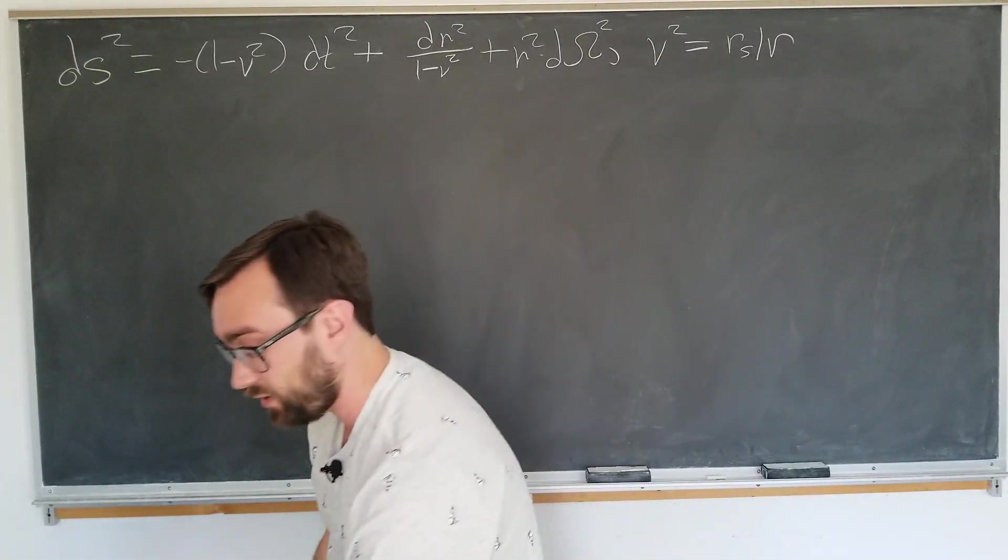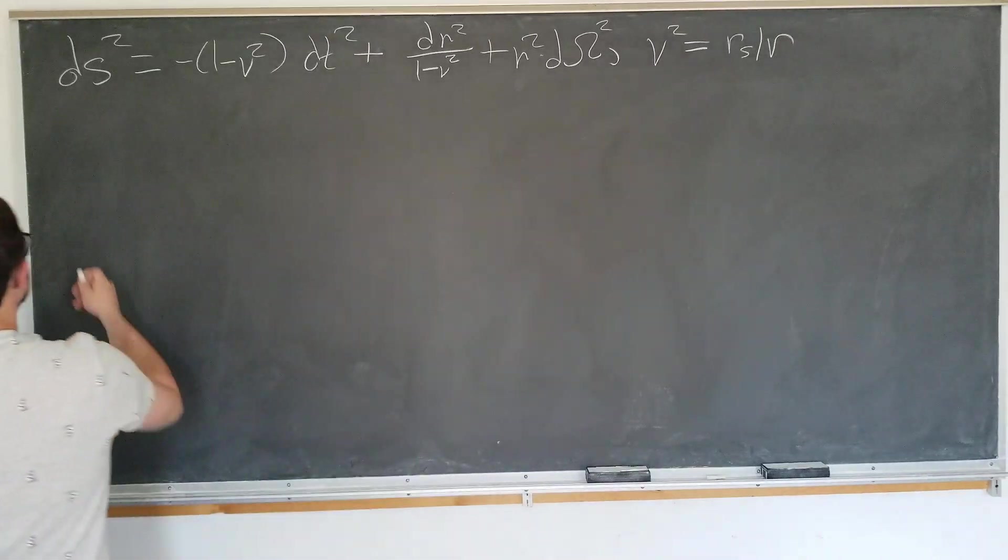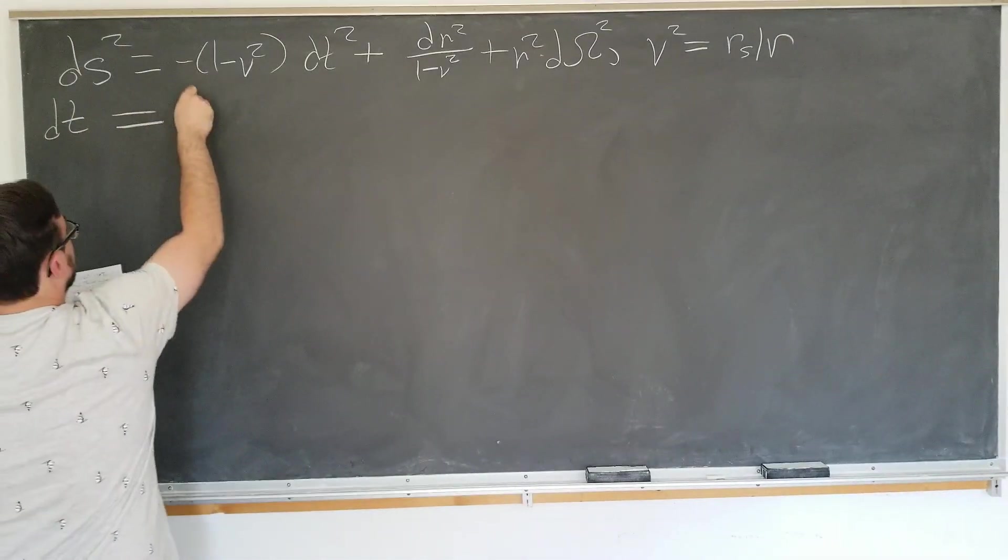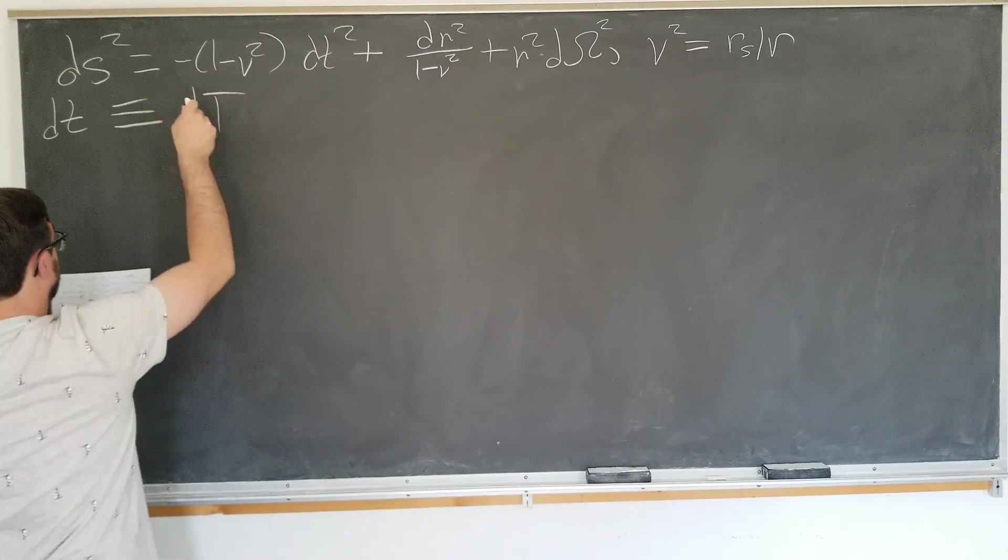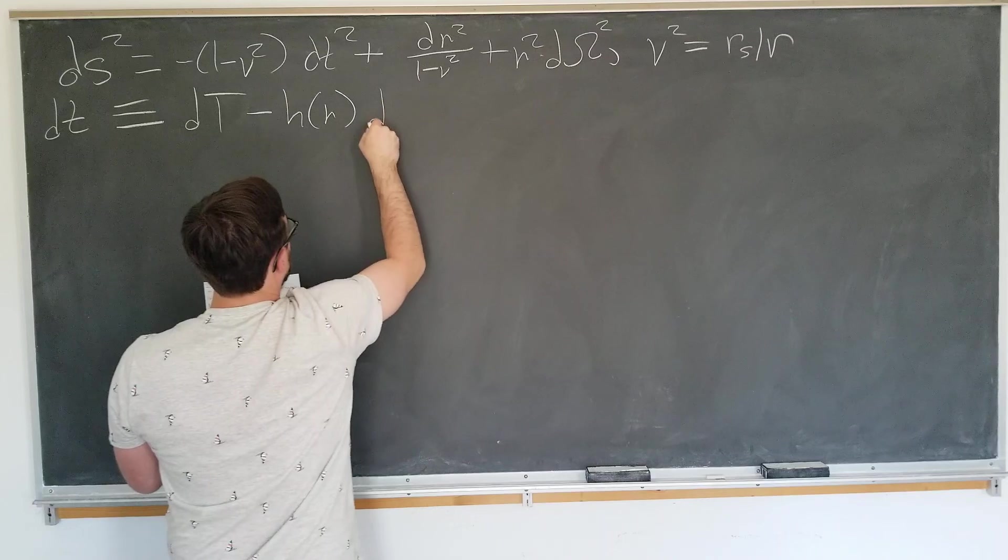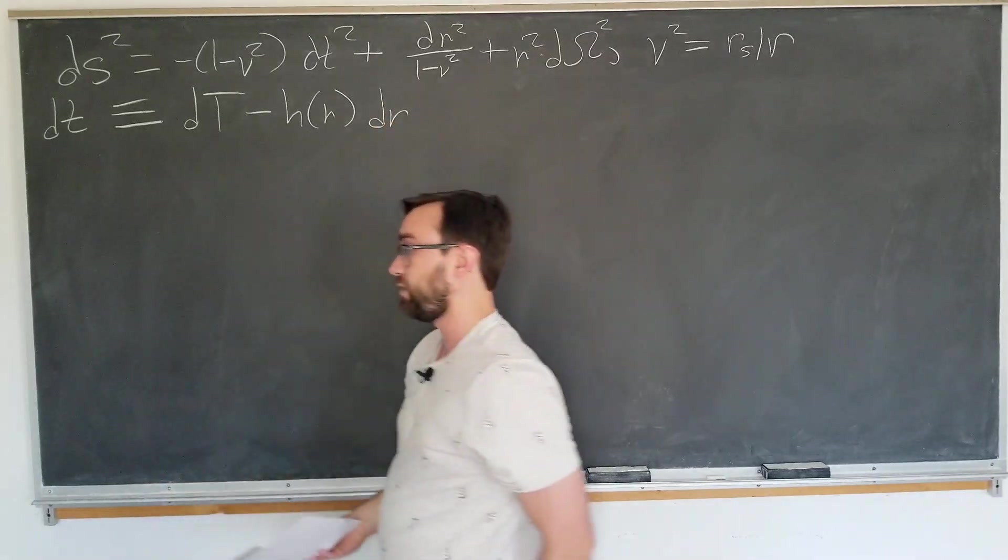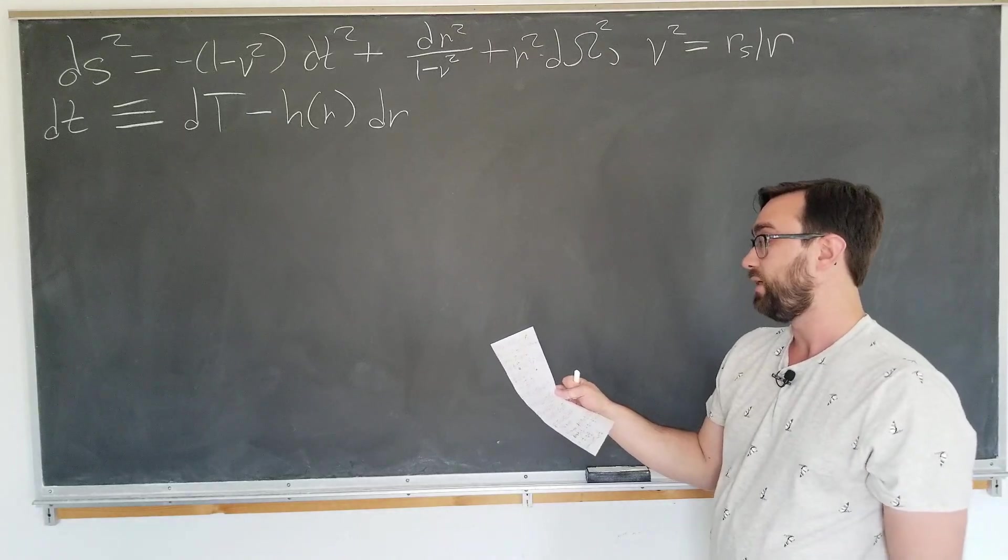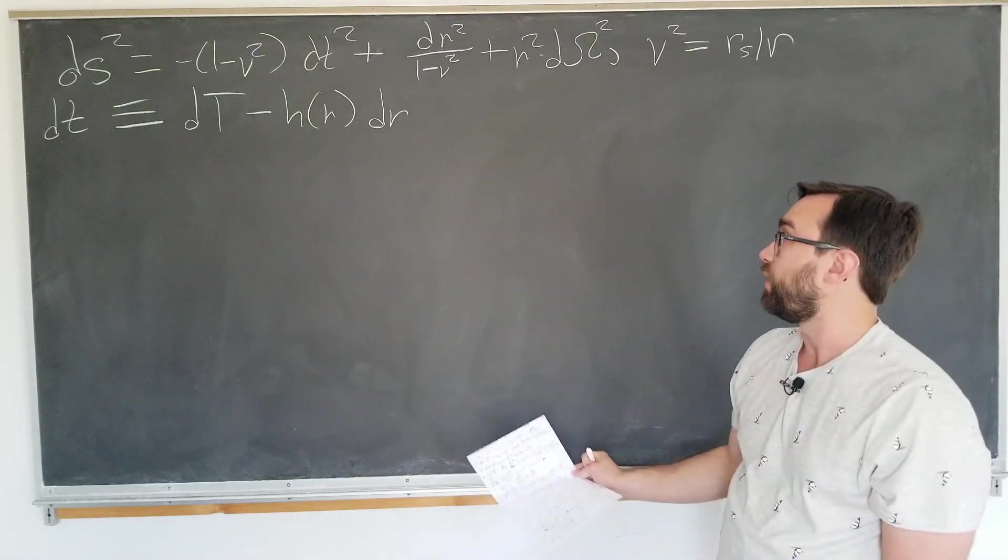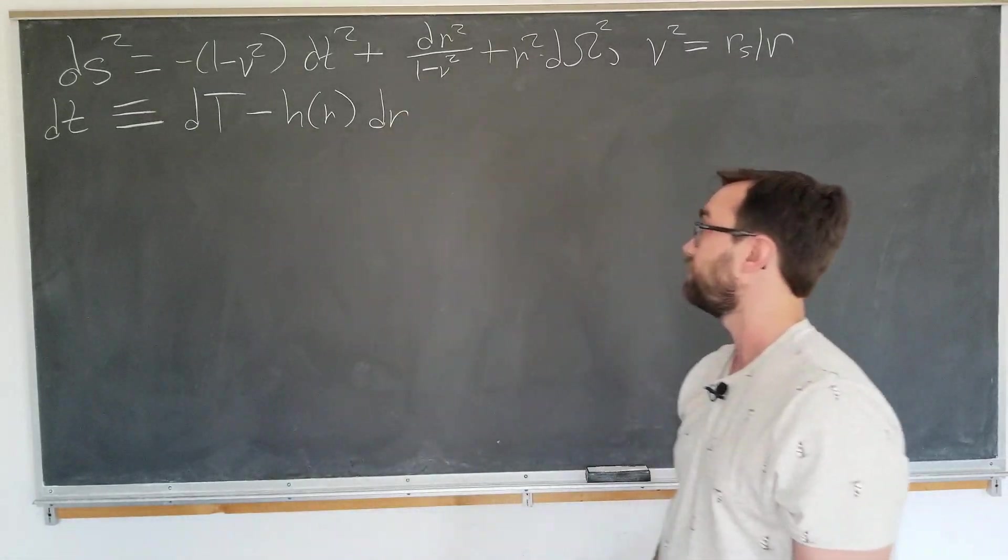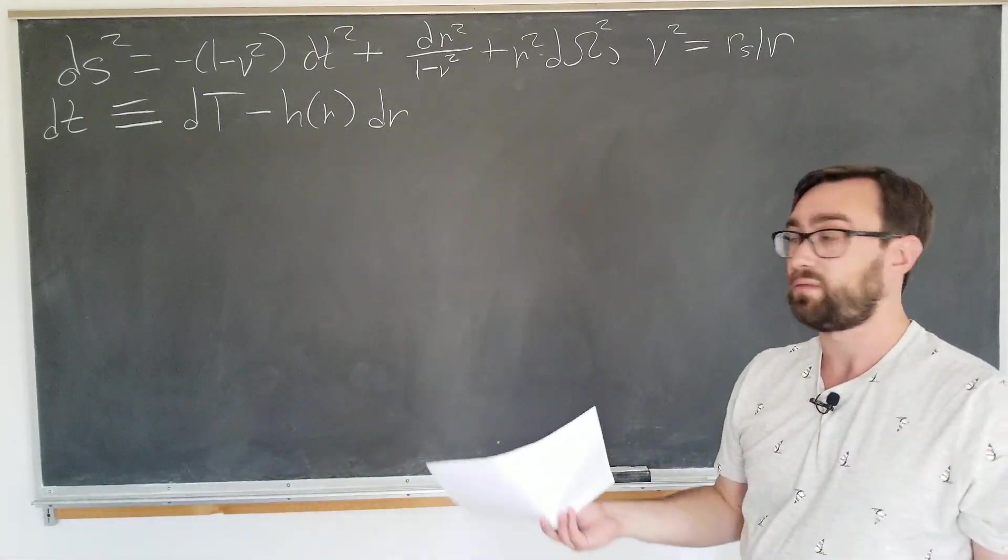We are going to be using a substitution. We're going to take the time coordinate and define our dt to be capital T minus an arbitrary function h of r dr. We're going to impose some conditions to find out what h of r has to be further on in the presentation. For now, let's keep it arbitrary and plug it into the dr and the dt and we'll see what we get.